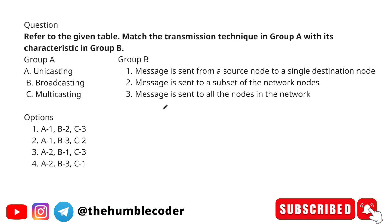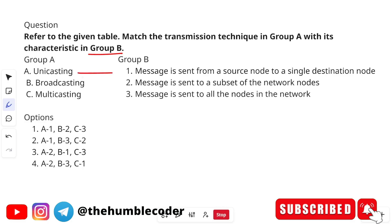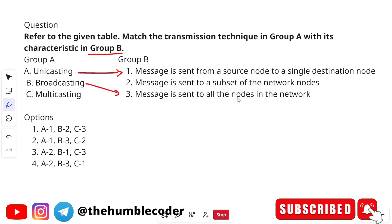The next question is a match-the-following. Match the transmission technique in Group A with its characteristic in Group B. Group A has: unicasting, broadcasting, and multicasting. Group B definitions are: message is sent from source node to a single destination node; message is sent to a subset of network nodes; message is sent to all nodes in the network. Unicasting maps to 'single destination node' (A→1). Broadcasting maps to 'all nodes in the network' (B→3).